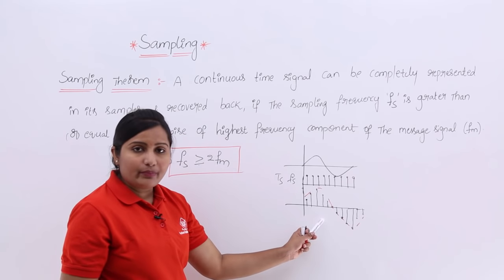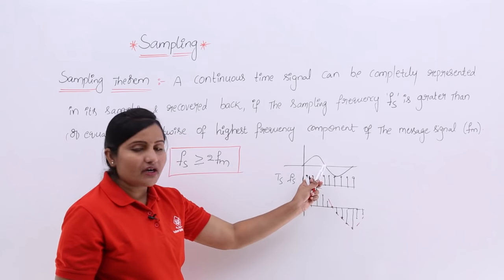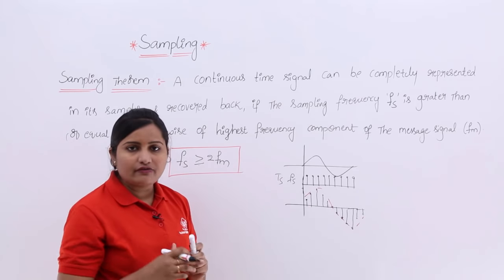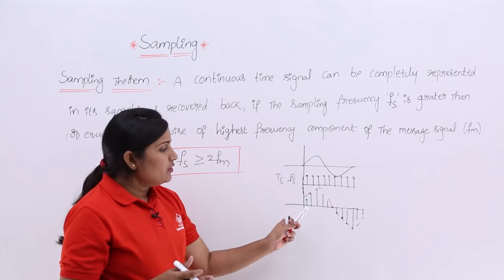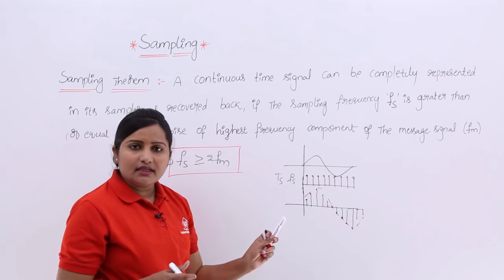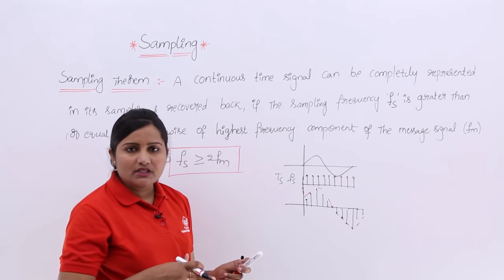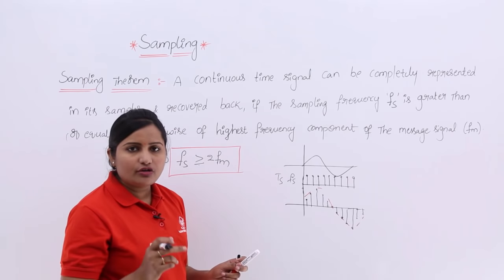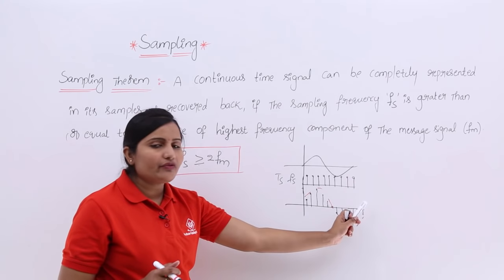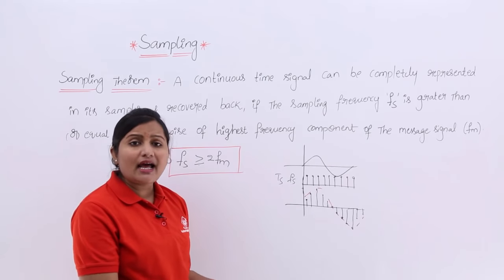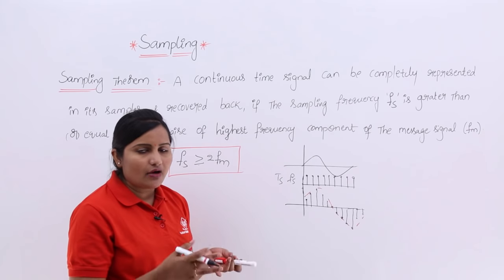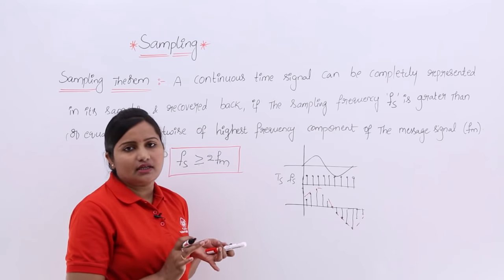This sampled signal takes the structure of the continuous signal. If it is in this form then you can recover back your signal. To recover back your signal, you just take the envelope of this signal; there is another process I will show you in the next class on how to reconstruct your signal.